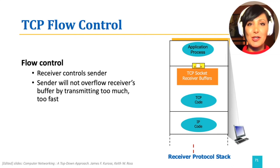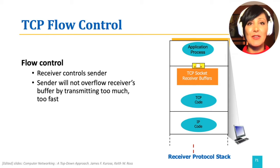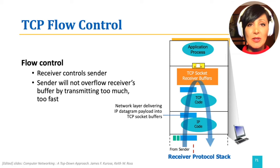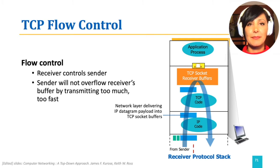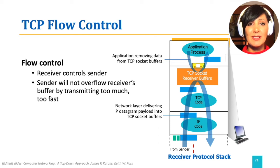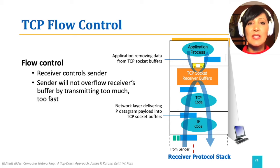One of the services TCP offers is flow control. This means the TCP sender will not overwhelm the TCP receiver. When datagrams arrive at the receiver, the segments carried are delivered to the TCP from the IP layer. The TCP socket puts the data in its receive buffer, and the application reads this data from the buffer. When the data arrives, the receiving application might be busy with something else and might not be willing to read it right away.